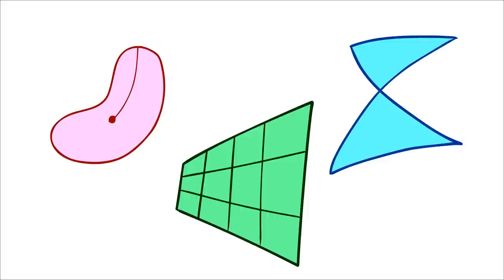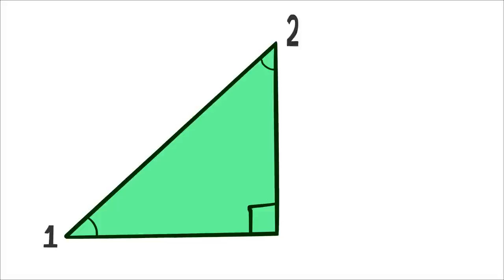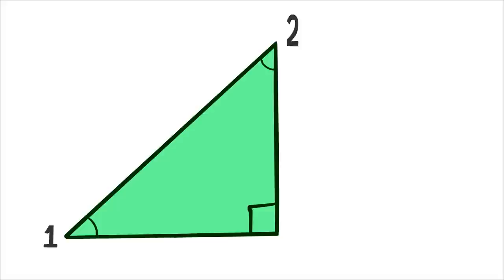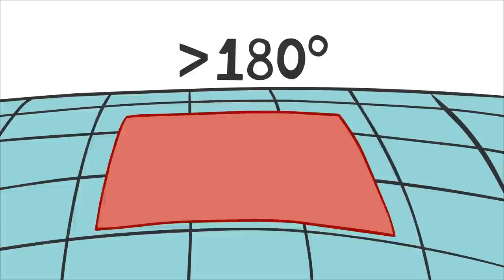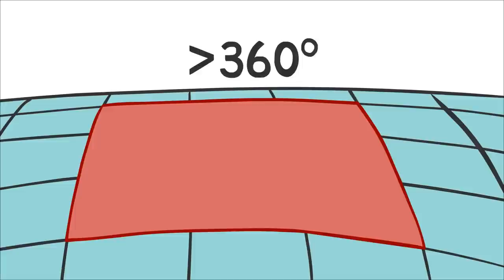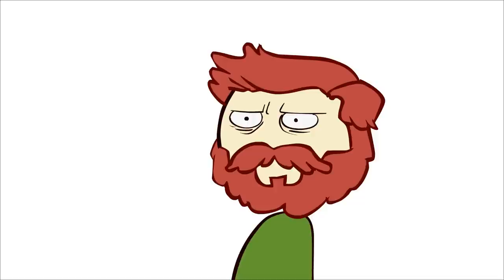And this, like with Bolyai and Lobachevsky's earlier hyperbolic geometry, does strange and unnatural seeming things to our shapes. When you add up the angles in a triangle, how many do you get? Well, on a normal Euclidean plane, you get the sum of two right angles. But here, on our hyperbolic surface, here, our triangle's angles add up to more than two right angles. And our squares, as much as such a concept is even still possible, all have angles that add up to more than four right angles.